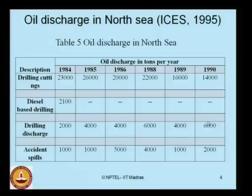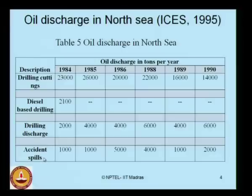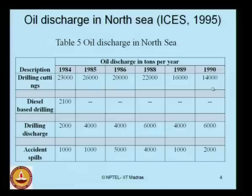Unfortunately, accidental spills in 1984 were limited to about 1,000 tons per year, but rose alarmingly to about 5,000 tons in 1986. Some control measures have since reduced this to 2,000 tons. However, please remember that accidents from oil spills are inevitable and irreversible. So even in 1990, there is a report stating 2,000 tons of oil discharge in that year.